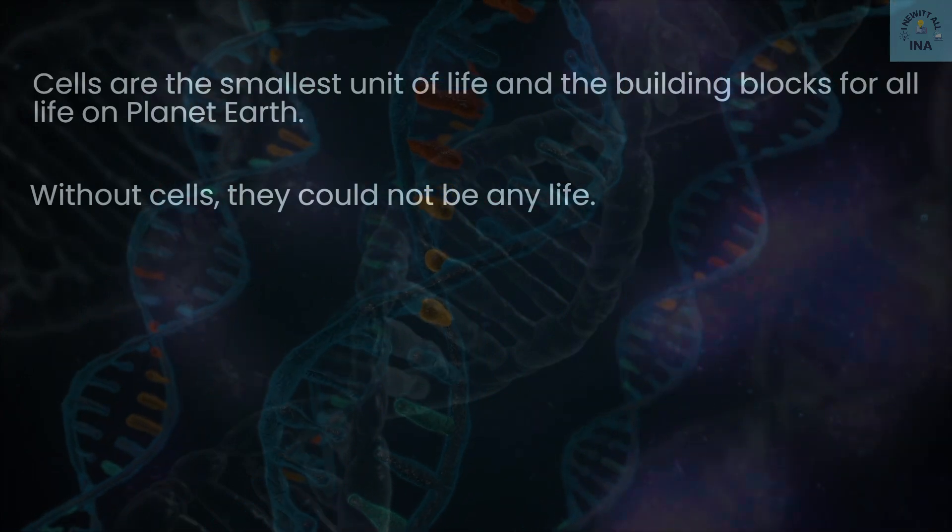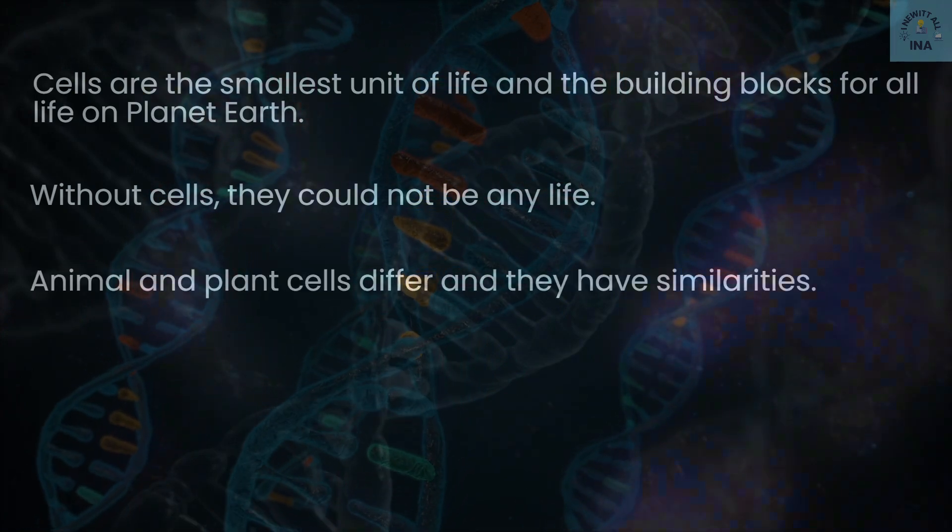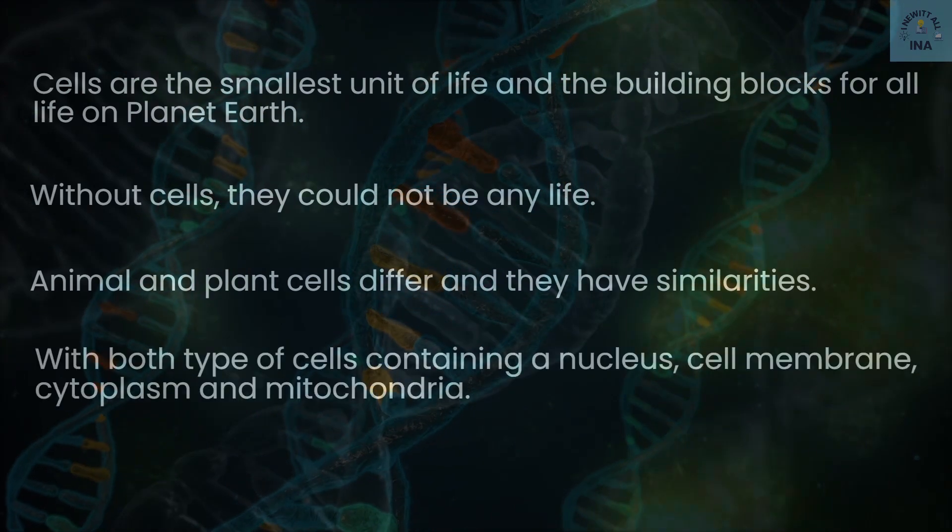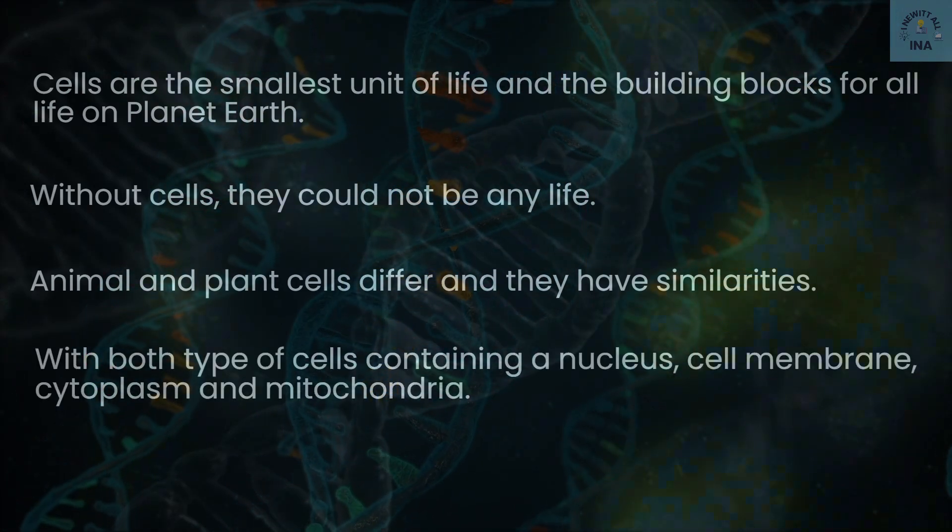Animal and plant cells differ and they have similarities, with both types of cells containing a nucleus, cell membrane, cytoplasm, and mitochondria.